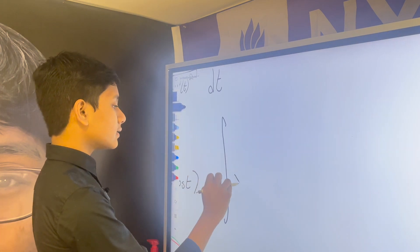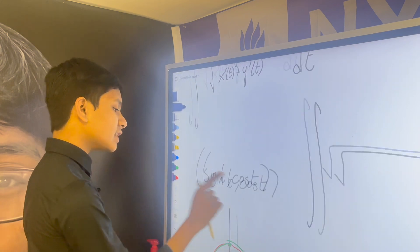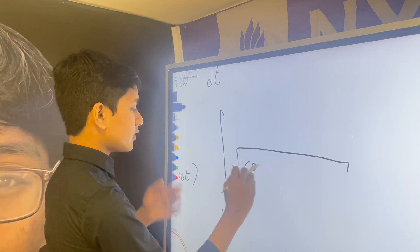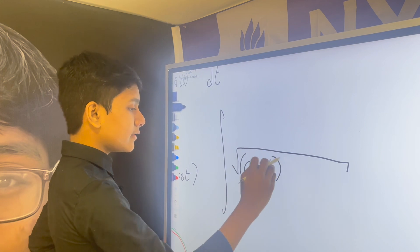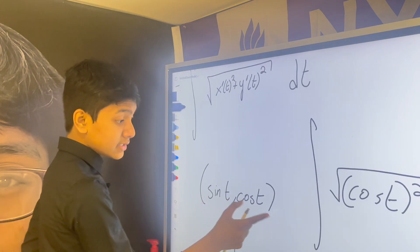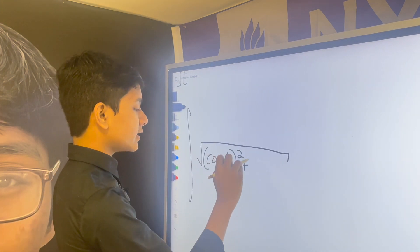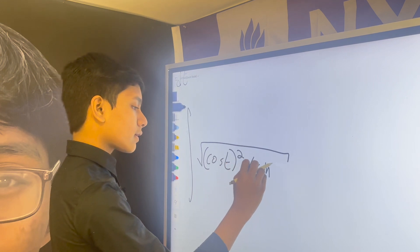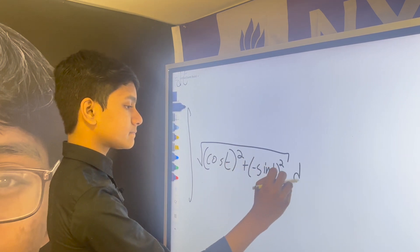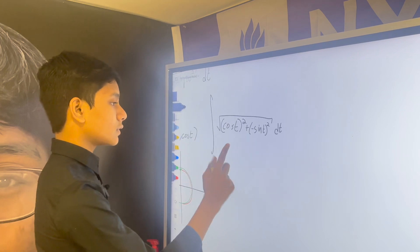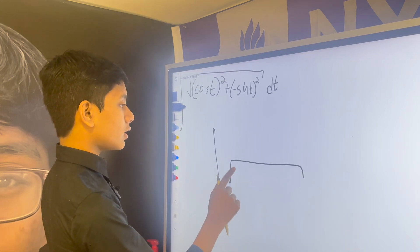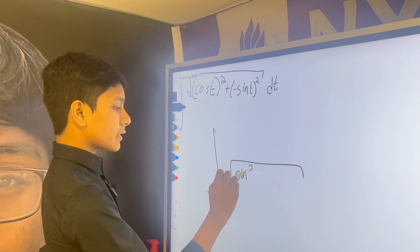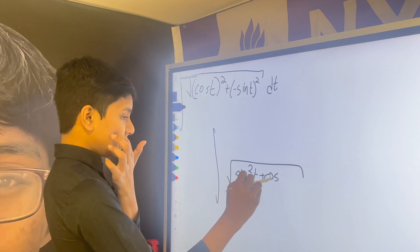But, anyhow, if we take the derivative of sine of t, that just gives you cosine of t. And, if you take the derivative of cosine of t, that just gives you negative sine of t. So, that gives you the square root of sine squared t plus cosine squared t dt.